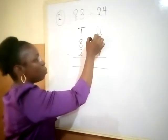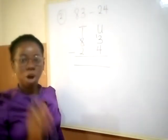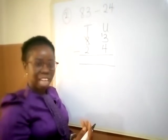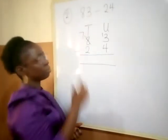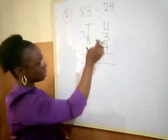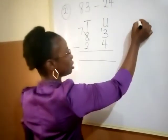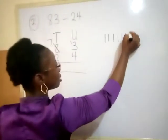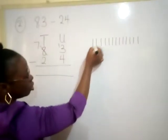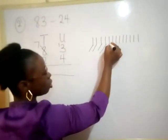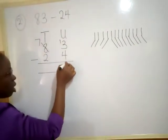I'll borrow one here and bring it here. This becomes 13. Now look at eight — I'll borrow one there. When you borrow one from a number, it's just as if you are counting backward. The number before eight is seven. So if I borrow one from eight, it remains seven. So therefore, I'll count thirteen, take away four. Thirteen minus four gives nine.